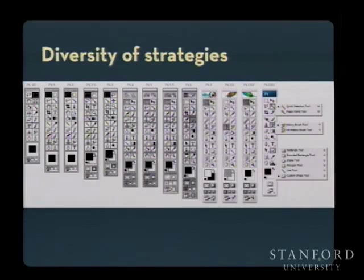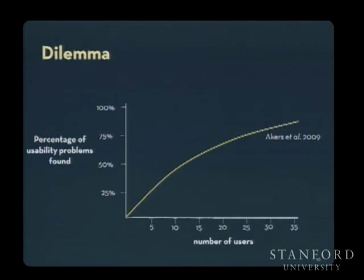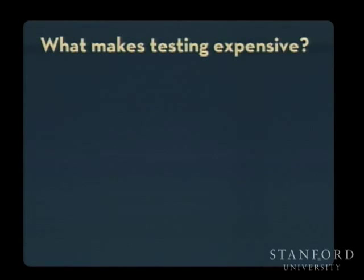So we have a dilemma: we need a large number of participants to test these creation-oriented applications, but it's expensive to run many participants through a test. What we need is some way to increase the efficiency of our testing and effectively increase the scale at which we can run it.